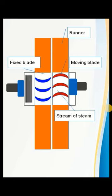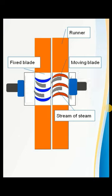High pressure steam passing over the fixed blades and moving blades gets expanded in this way. The heat energy is converted into mechanical energy in the reaction turbine.